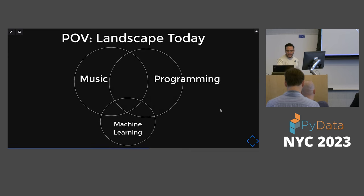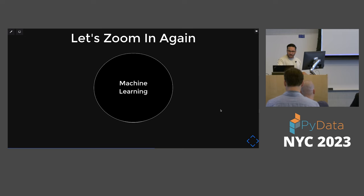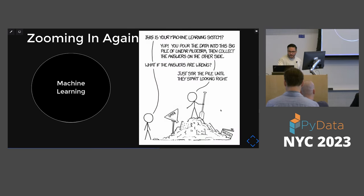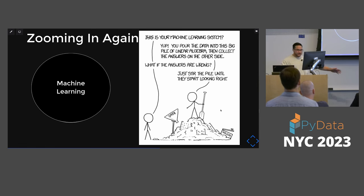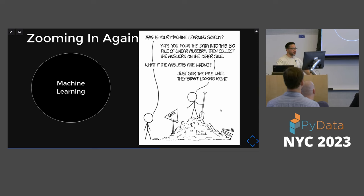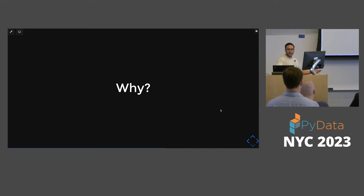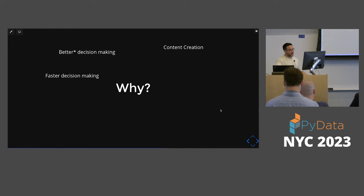What about machine learning? For those who don't have experience: you have a pile of data, you put in a bunch of data, you tell it what the label is, and then you let it do its thing. That's machine learning. Why is it important? Better decision making — 'better' is quite questionable depending on your use case. Faster decision making, content creation, automation, personalized experiences, privacy protection, and innovation. Those are cool things we can all agree machine learning provides us today.